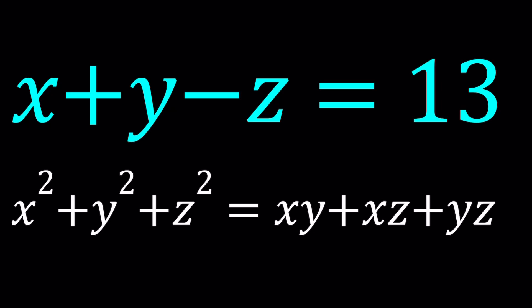Let's get to the problem. We have x plus y minus z equals 13, and x squared plus y squared plus z squared equals xy plus xz plus yz. So this is kind of like a weird system, because we have three variables and only two equations.